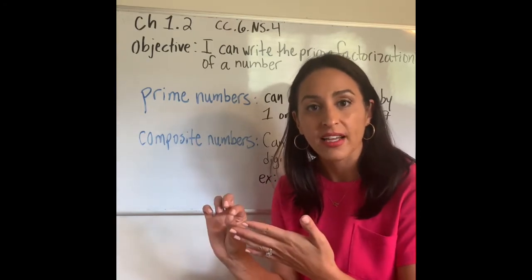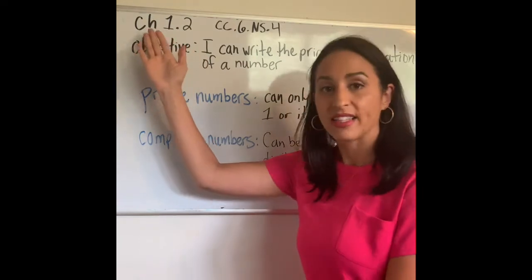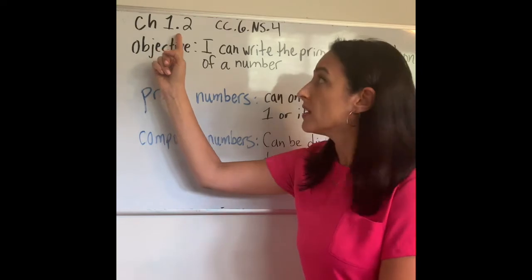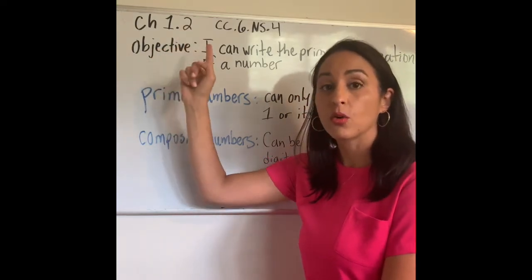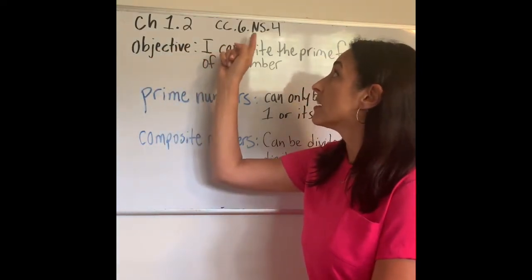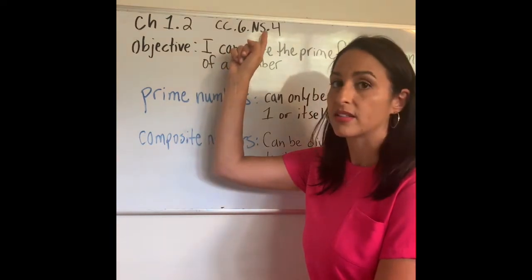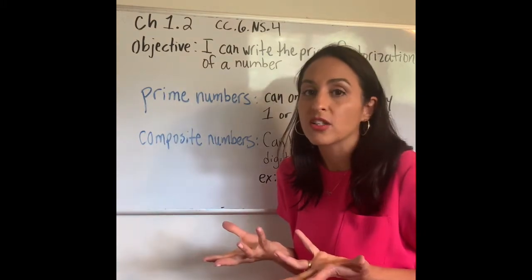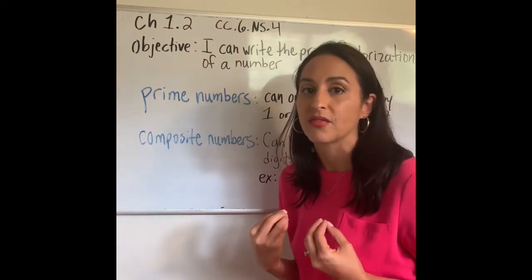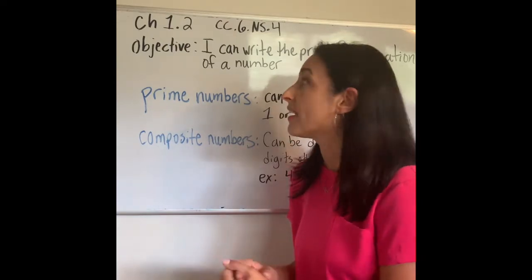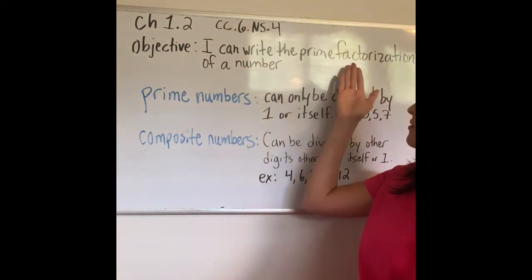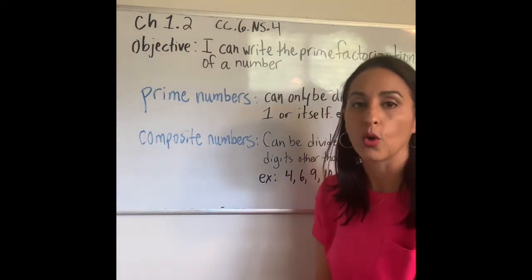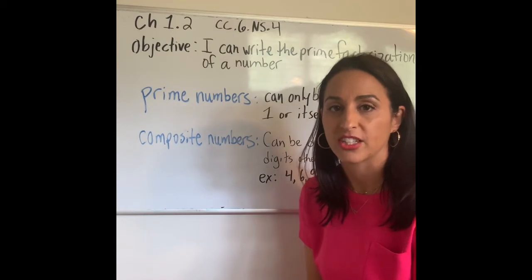Remember, have your notebook in hand. Let's go ahead and write down our title. We're going to be on Chapter 1 from GoMath, Lesson 2, Common Core State Standards CC6, and S for number sense, 4. Our objective — what is it that you're trying to get from this lesson? At the end of this lesson, you're going to be able to say: I can write the prime factorization of a number. That is your goal.